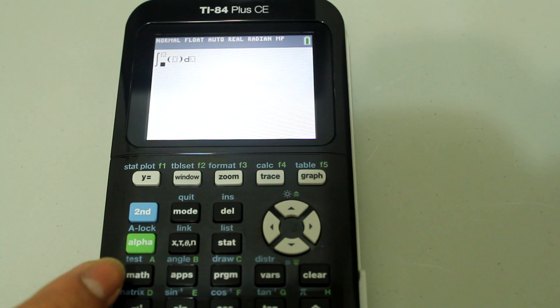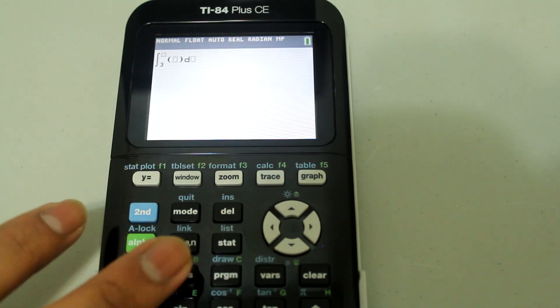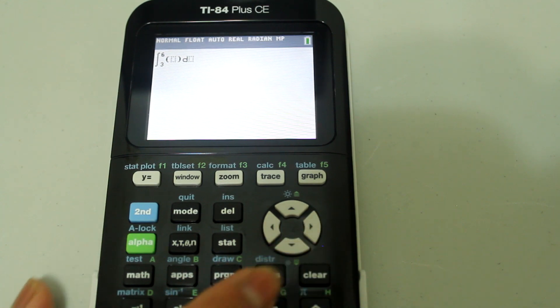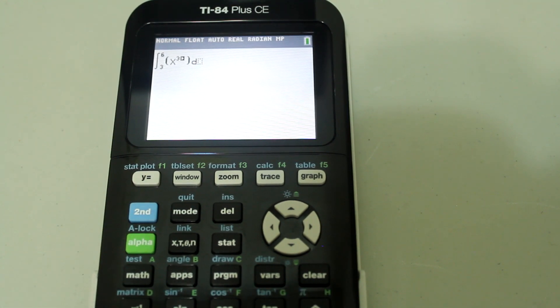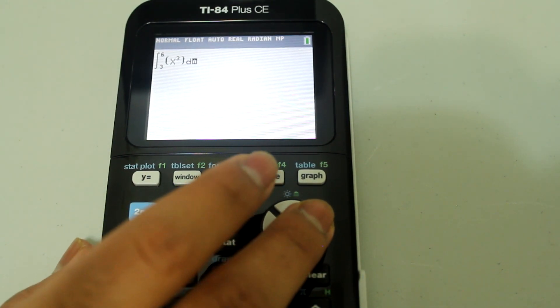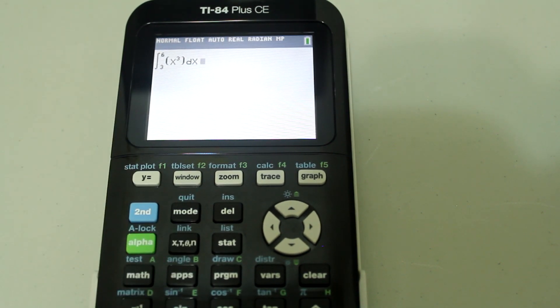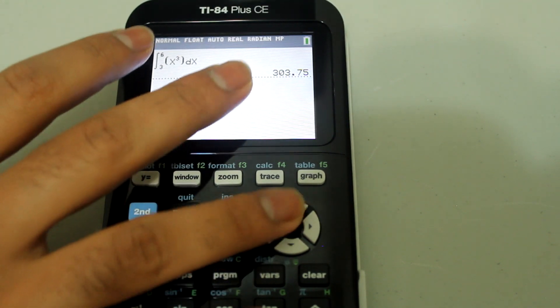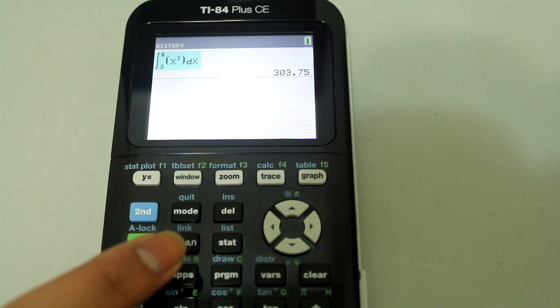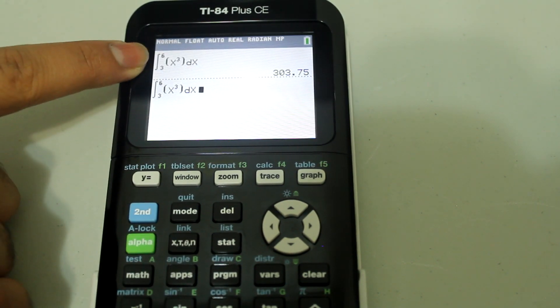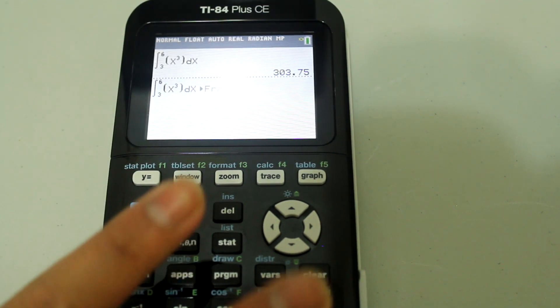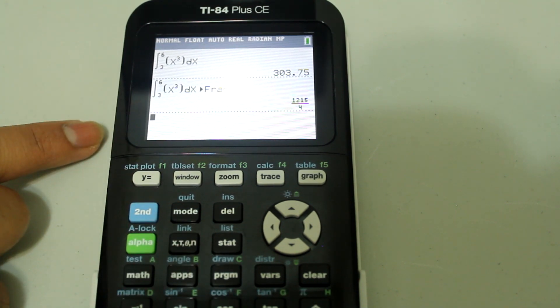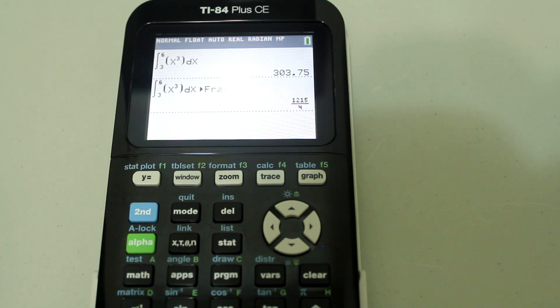So let's say we're going to integrate something from 3 to 6. So those are the limits of integration. And let's keep it really simple and let's do x cubed. And then you definitely have to put the dx at the end of all of this, and it gives you the integral. Now if you wanted it in terms of fraction, all you have to do is go back to math, fractions are already selected because it's number 1, just hit enter, and it shows you the integral in terms of fractions.